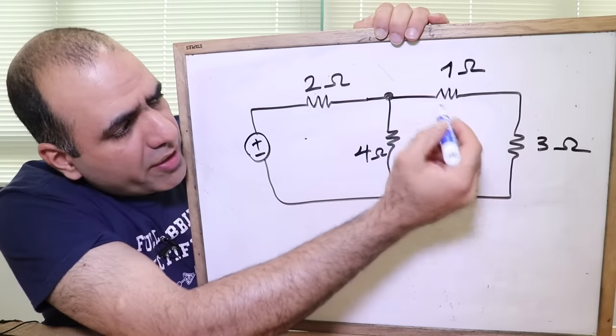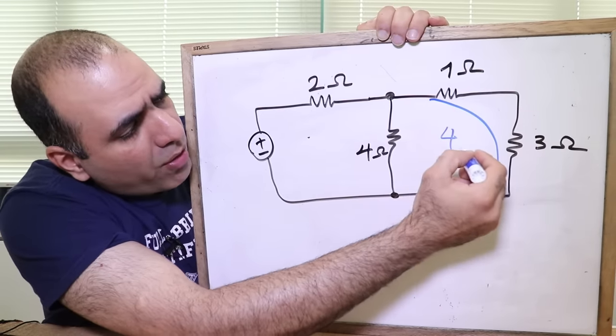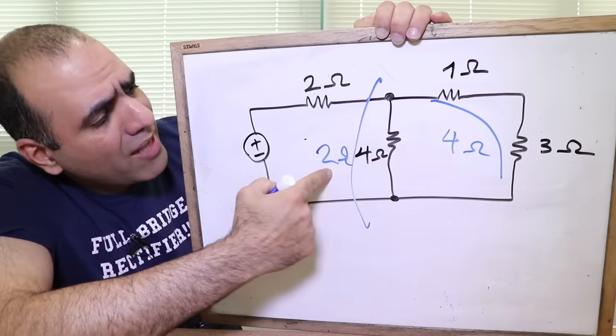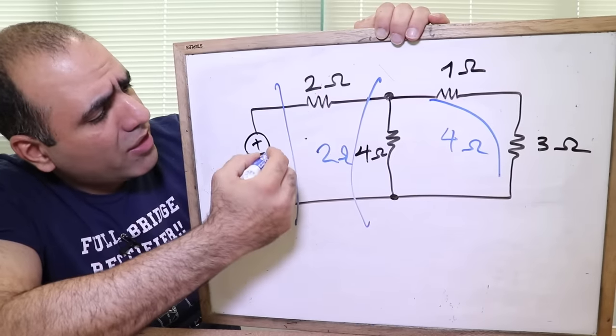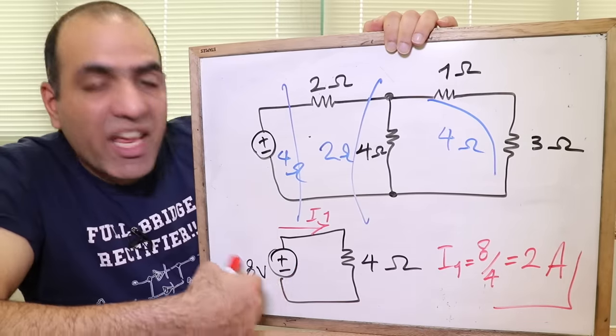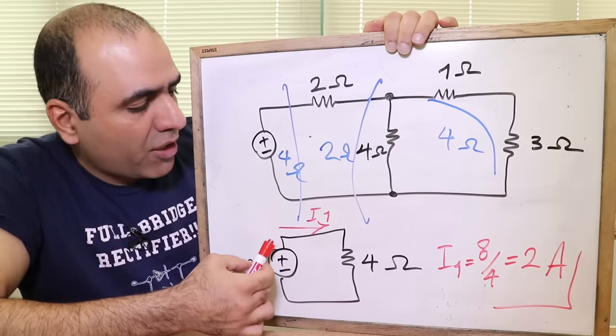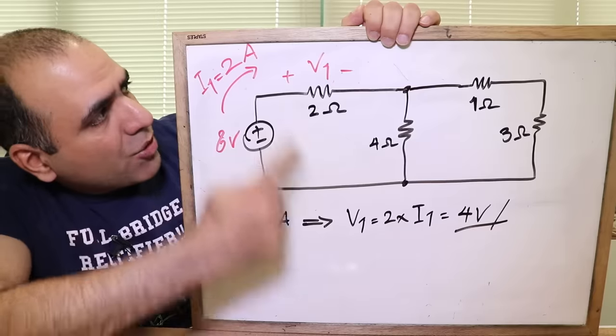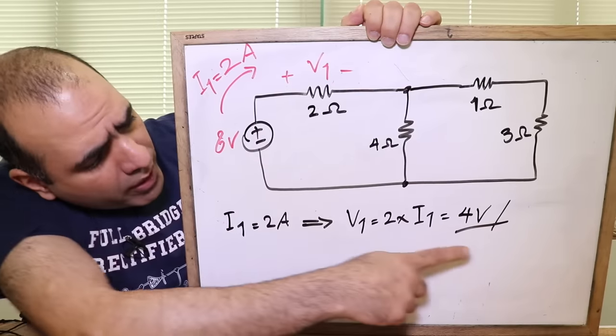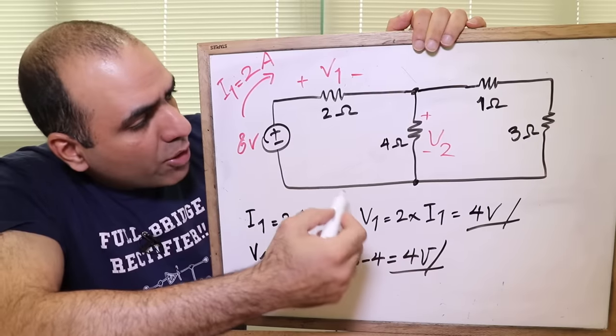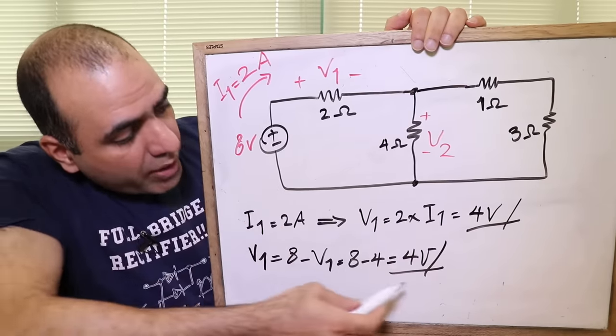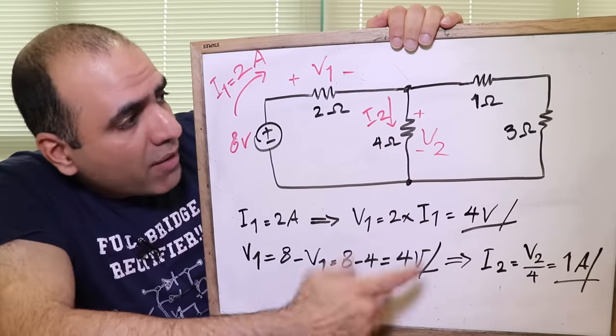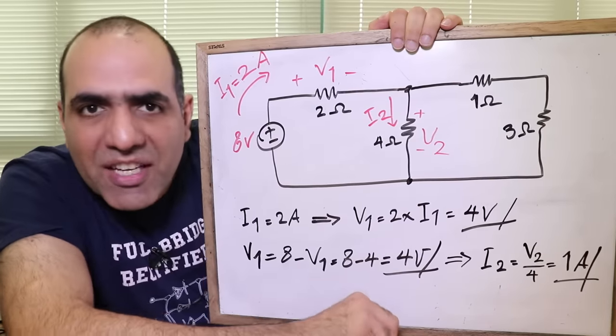For example, I know these two are in series, so their equivalent resistance is 1 plus 3 or 4 ohms. And this 4 ohm is parallel to that 4 ohm, so the equivalent resistance here is 2 ohm. And that 2 ohm is series with this one, so the equivalent resistance here is 4 ohms. So this entire circuit is like an 8 volt supply across a 4 ohm resistor. The current going out of the supply is 8 volt divided by 4 ohms or 2 amps. As soon as we know I1, V1 is 2 ohm times I1 or 4 volts. Right there, from KVL in this loop, we know V2 is equal 8 minus V1 or 4 volts. And easy as that, we know I2 is V2 divided by 4 or 1 amp. And from KCL we know... I'll leave the rest to you.